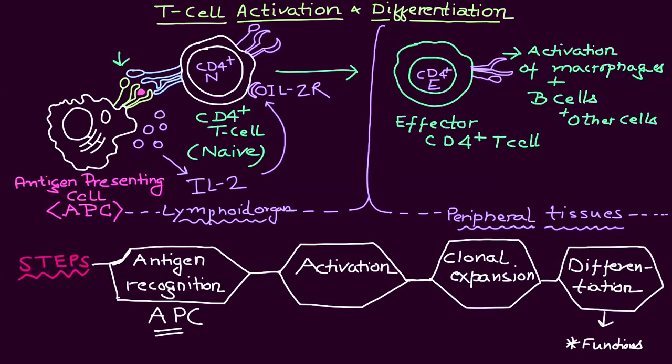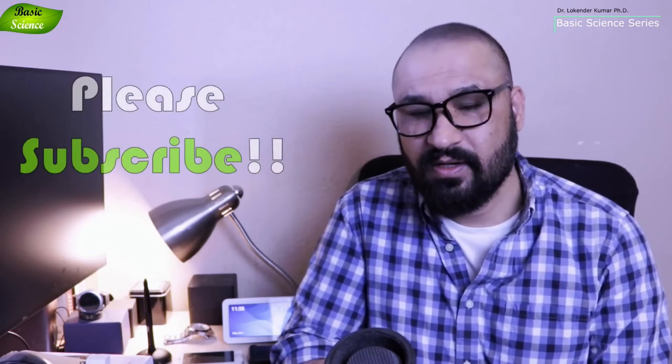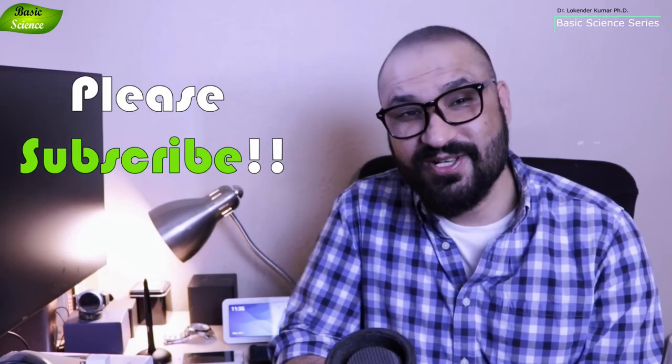The process of T cell activation and differentiation should now be clear. In this video we discussed the stages involved in T cell activation and differentiation: antigen recognition, activation, clonal expansion, and differentiation. We also discussed the roles of effector T cells.